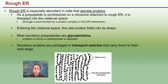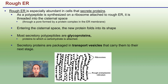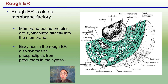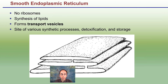These folds create an efficient shape. Glycoproteins — proteins with a carbohydrate group, such as a protein with glucose attached — are packaged into transport vesicles that can move to the next stage. While information is coming out of the nucleus into the ER, it may not be finished when it leaves and may have one more step to finalize. The rough ER is also a membrane factory: membrane-bound proteins are synthesized directly into the membrane itself, and enzymes in the rough ER synthesize phospholipids from precursors in the cytosol.